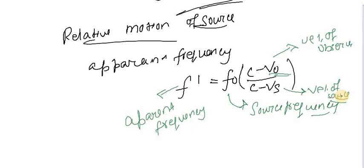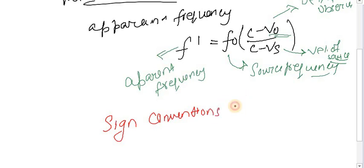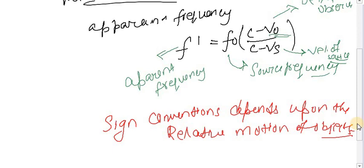The sign convention for Doppler's effect depends upon the relative motion of the objects — the observer and the source. It works like mathematical coordinates: if moving toward the right it is positive, if moving toward the left it is negative. You can define your own coordinate system and the answer will be the same in all cases.